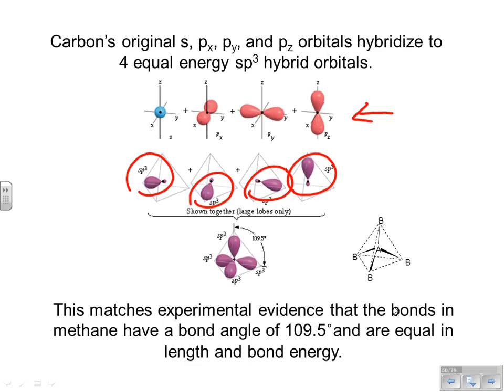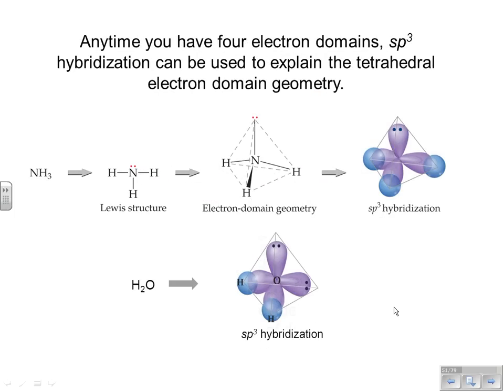Anytime you have four electron domains you're going to have sp³ hybridization. In NH₃ — one unshared pair and three single bonds — you still have sp³ hybridization and roughly the 109.5-degree tetrahedral repulsion; the unshared pair just occupies a slightly greater region of space, bending the bond angle slightly below 109.5. Water has two unshared pairs and two single bonds, and also needs four equal-energy hybrid orbitals. So CH₄, NH₃, and H₂O all have four electron domains and are all sp³ hybridization.